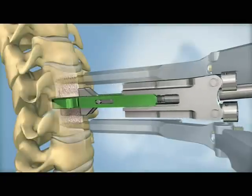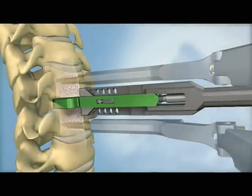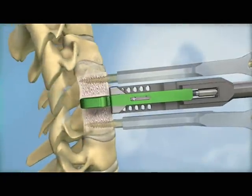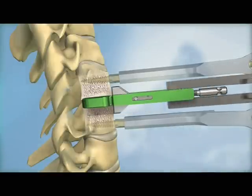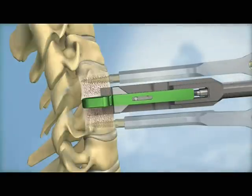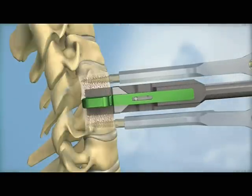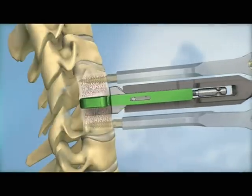The chisel technique utilizes two chisels to create the keel channels. First, the primary chisel is inserted over the trial and advanced into the vertebral bodies. The step is repeated with a secondary chisel to remove any remaining bits of bone from the keel channels.